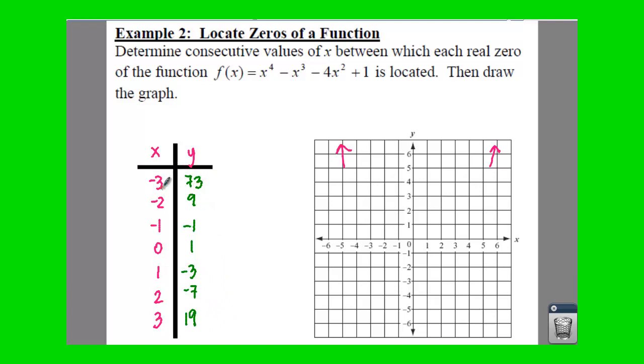So we're going to plot these points. Now it's going to be difficult to graph negative three, 73. So that we won't really be able to do. But we could graph a negative two up nine. So here's our negative two up nine. Negative one, down one. And go zero, one, which is right here.